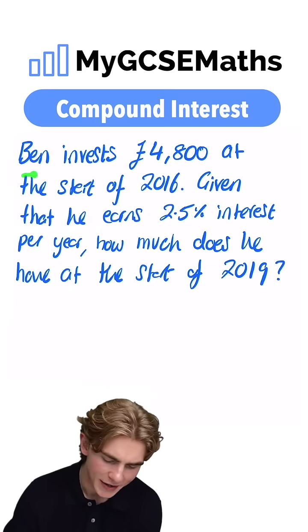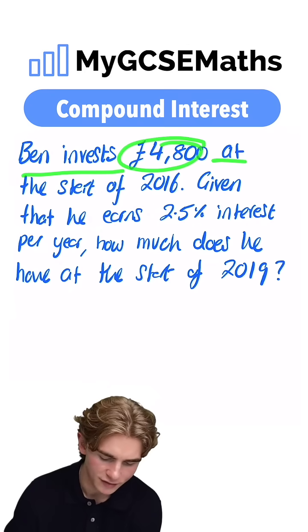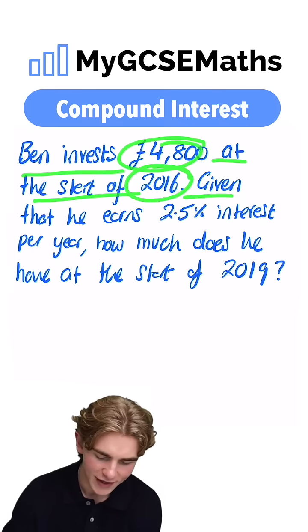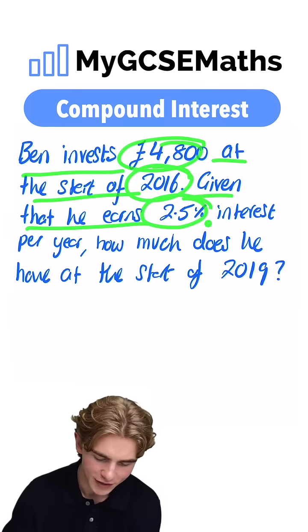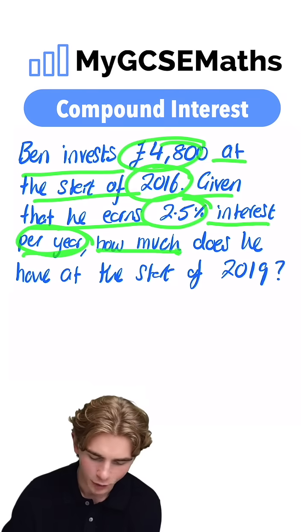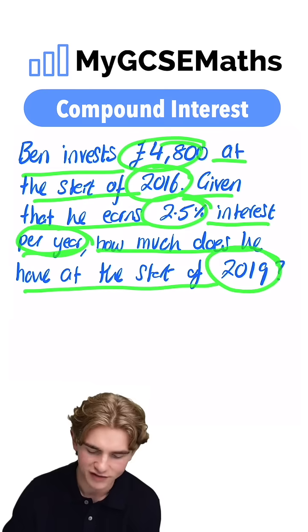Let's have a look. It says Ben invests £4,800 at the start of 2016. Given that he earns 2.5% interest per year, how much does he have at the start of 2019?